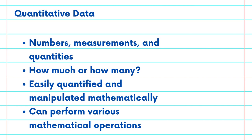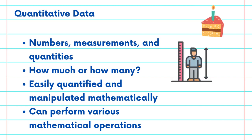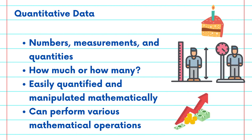Quantitative data is precise and can be easily quantified and manipulated mathematically. For example: age, height, weight, income, and temperature. With quantitative data, we can perform various mathematical operations like addition, subtraction, multiplication, and division. It allows us to calculate averages and percentages and make meaningful comparisons out of these calculations.